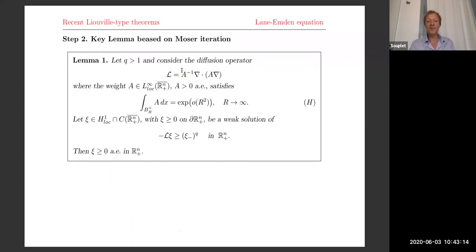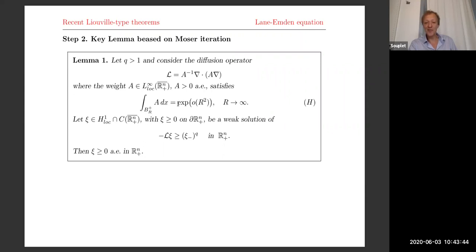The lemma is more general: take any weighted operator of this kind with a locally bounded weight, positive almost everywhere. The key assumption is sub-Gaussian growth — the integral of the weight on the half-ball B_r^+ grows slower than Gaussian. Then if you take any weak solution of this inequality — and you can allow the negative part of ψ instead of ψ itself — the solution has to be non-negative almost everywhere.